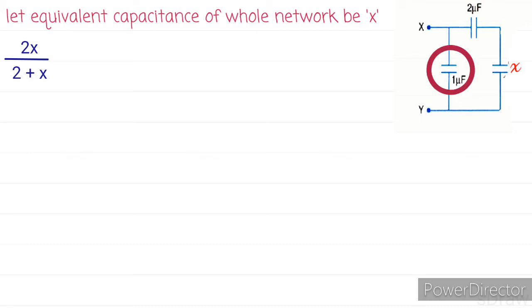Now let's solve this sum without further ado. 2x divided by 2 plus x, and 1 equals to equivalent capacitance. The equivalent capacitance is x.